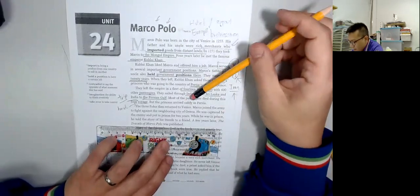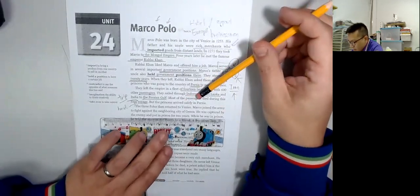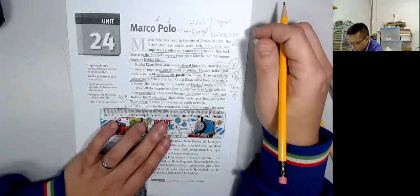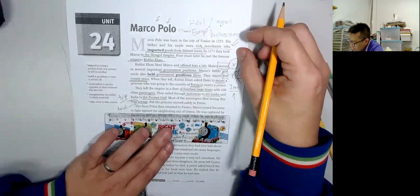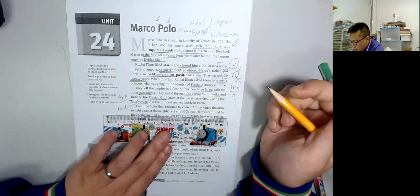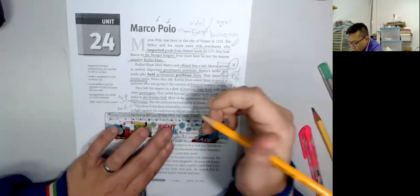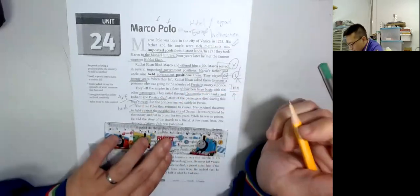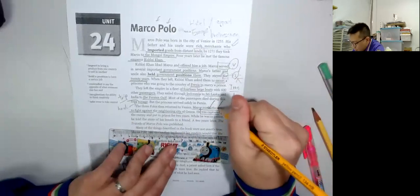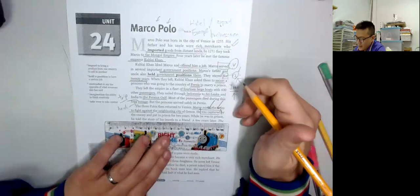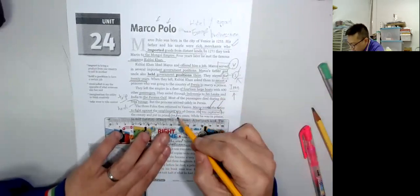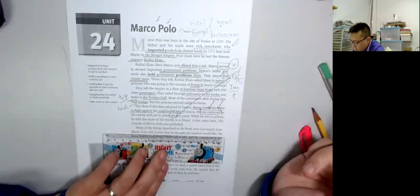The princess arrived safely in Persia. The three Polos then returned to Venice. Marco joined the army to fight against the neighboring city. He was captured by the enemy and put in prison for two years.